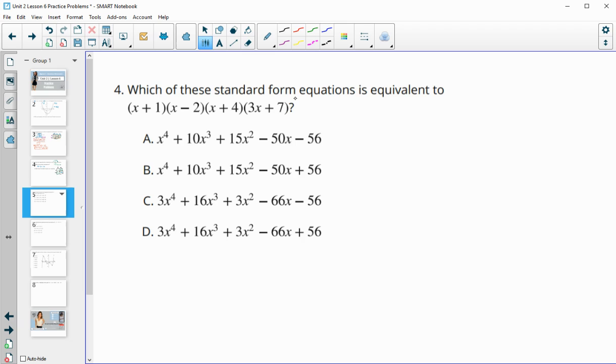Number 4, which of the following standard form equations is equivalent to this? Let's see if we can rule a couple out here. Because I don't really feel like multiplying together four binomials. So let's take a look at the constant term. We can see at the end here it's either going to be positive 56 or negative 56. So we would multiply 1 times negative 2 times 4 and then times 7. That's going to be a negative since we're going positive, positive, positive times a negative. So this is going to be negative 56. So that rules out a few of these choices. It's not B and it's not D because of the constant term.